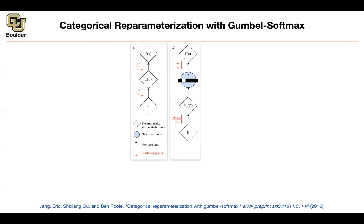With stochastic architectures, you have theta that is defining a probability distribution over a random variable. Then you are going to keep sampling from that random variable to write down your loss function. You have some parameters, they are defining your probability distribution, you keep sampling from that probability distribution, push them through the rest of your architecture, and that's going to give you your loss function or any other objective function or output.